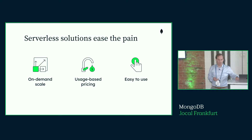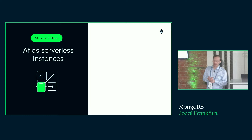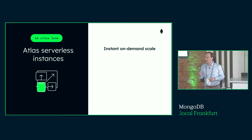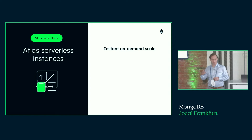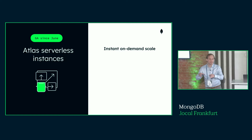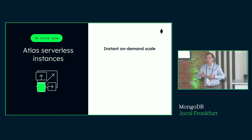We introduced Atlas Serverless Instances, which are GA since June this year. With Atlas Serverless Instances you get an instantly scalable MongoDB instance. With standard MongoDB Atlas you already have auto-scaling, but it's still based on deployed infrastructure — it monitors utilization, triggers a scale-up process, creates a new virtual machine, and migrates your database, so it takes some time. With Atlas Serverless Instances, scaling happens instantly.